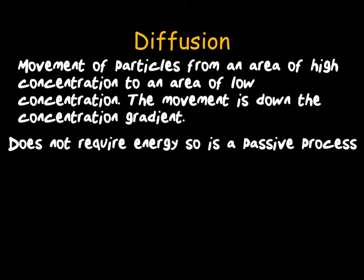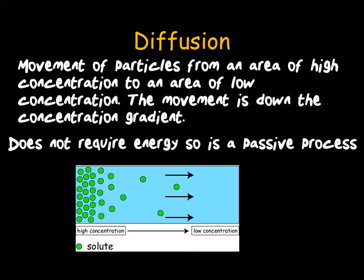Diffusion can happen in both liquids and gases. For example, if you were to spray a deodorant can on one side of the room, you would be able to smell it on the other side of the room after a few minutes, because the particles have diffused from that area of high concentration to an area of low concentration. Within our body, we use diffusion a lot, as it allows us to move small molecules such as glucose, amino acids, water, and oxygen across cell membranes into the cell.